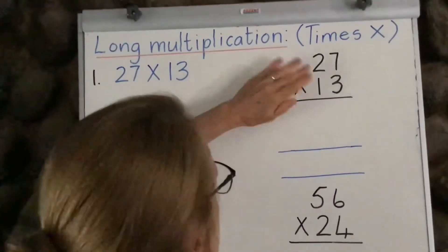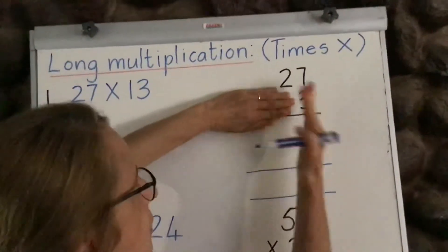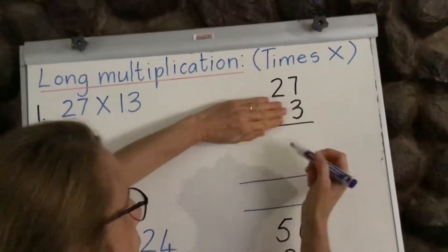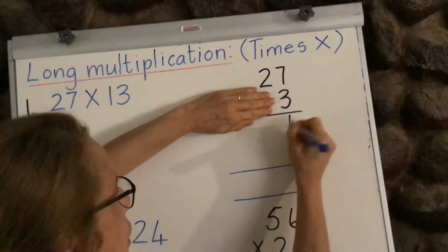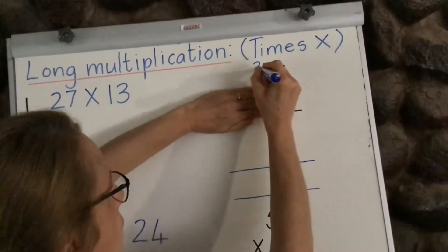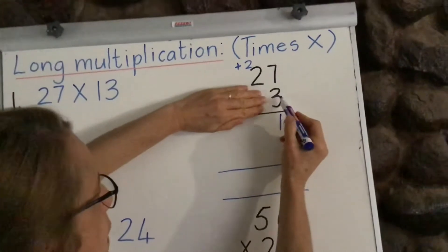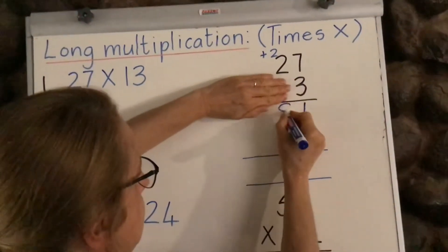First we're going to cover up the second number here. We're going to start with just the units, and it's going to be exactly the same as we would do it with our normal way with a one-digit. Three times seven is 21. We put down our unit, and we carry our 10 over there, which we're going to add in afterwards. Then we're going to say three times two is six, plus two is eight.